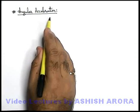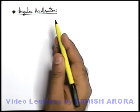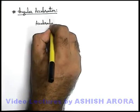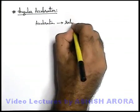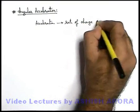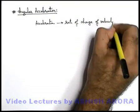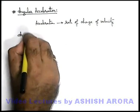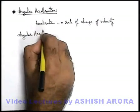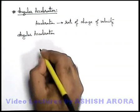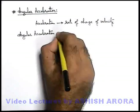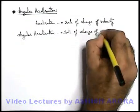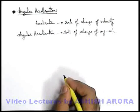Now we'll study angular acceleration. As far as the term acceleration is concerned, all of you are aware about it. Acceleration can be simply written as rate of change of velocity, which we've already studied in detail in previous chapters. Now we are going to study about angular acceleration. Angular acceleration is a characteristic of angular motion like circular motion, and it is defined as rate of change of angular velocity, which we have just defined in the previous section.